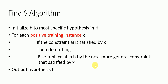So this is the Find-S algorithm: initialize h to the most specific hypothesis, which is what we did with the first positive training instance. If the instance is positive, check if the constraint is satisfied by x — if so, do nothing; else replace a of i with the next more generic value. This gives us the final hypothesis.